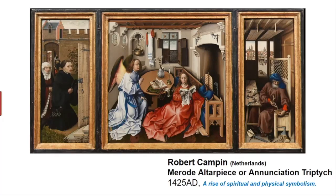This is the Merode Altarpiece by Robert Campin — a strange, realistic painting that's real and not quite real. You have the donors on the far left, and they're able to look through an open door at this holy scene. The scene itself in the center is the Annunciation — Gabriel announcing to Mary that she will be pregnant with the Christ child. Coming through the light in the window is a little cross shape with wings that represents the spirit entering into Mary.